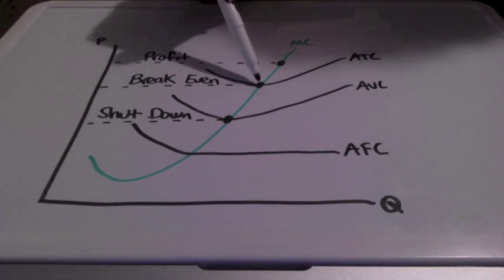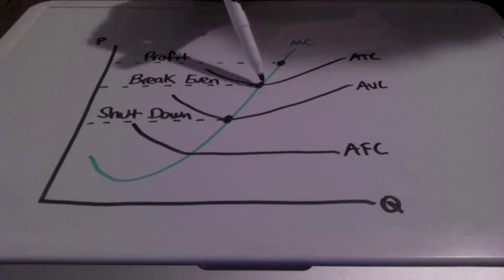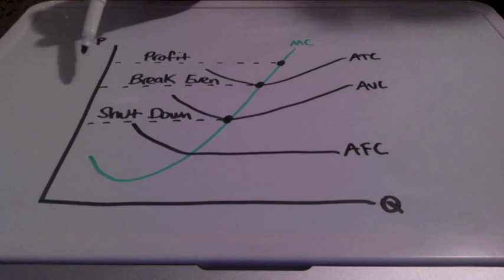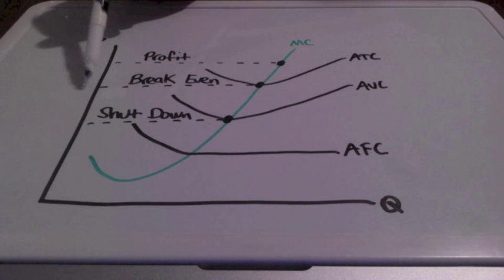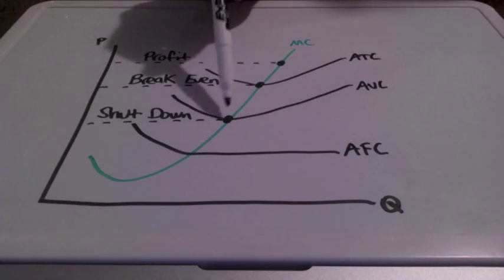If we're at this point on the marginal cost curve, we refer to this as minimum average total cost. This is called a break-even point — the price that we are charging for the good or service is the exact same as it cost to produce that good or service.